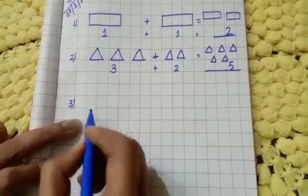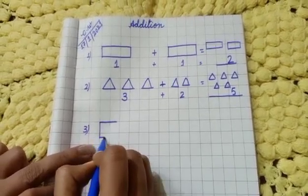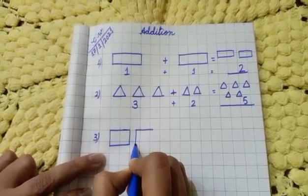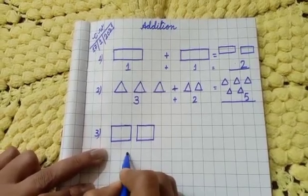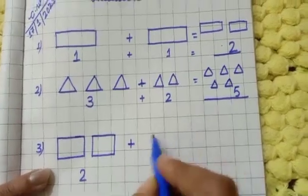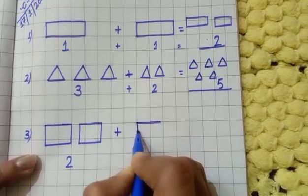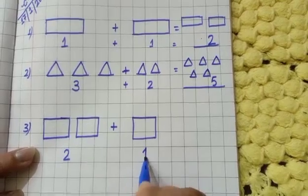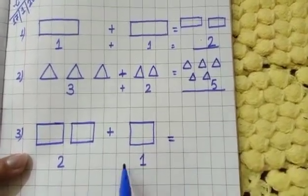For number three, I am drawing squares. This is one square, and this is another square, so here how many squares? Two — write two, then plus. Then draw one more square here, so I am writing one, equal to how many squares are there?